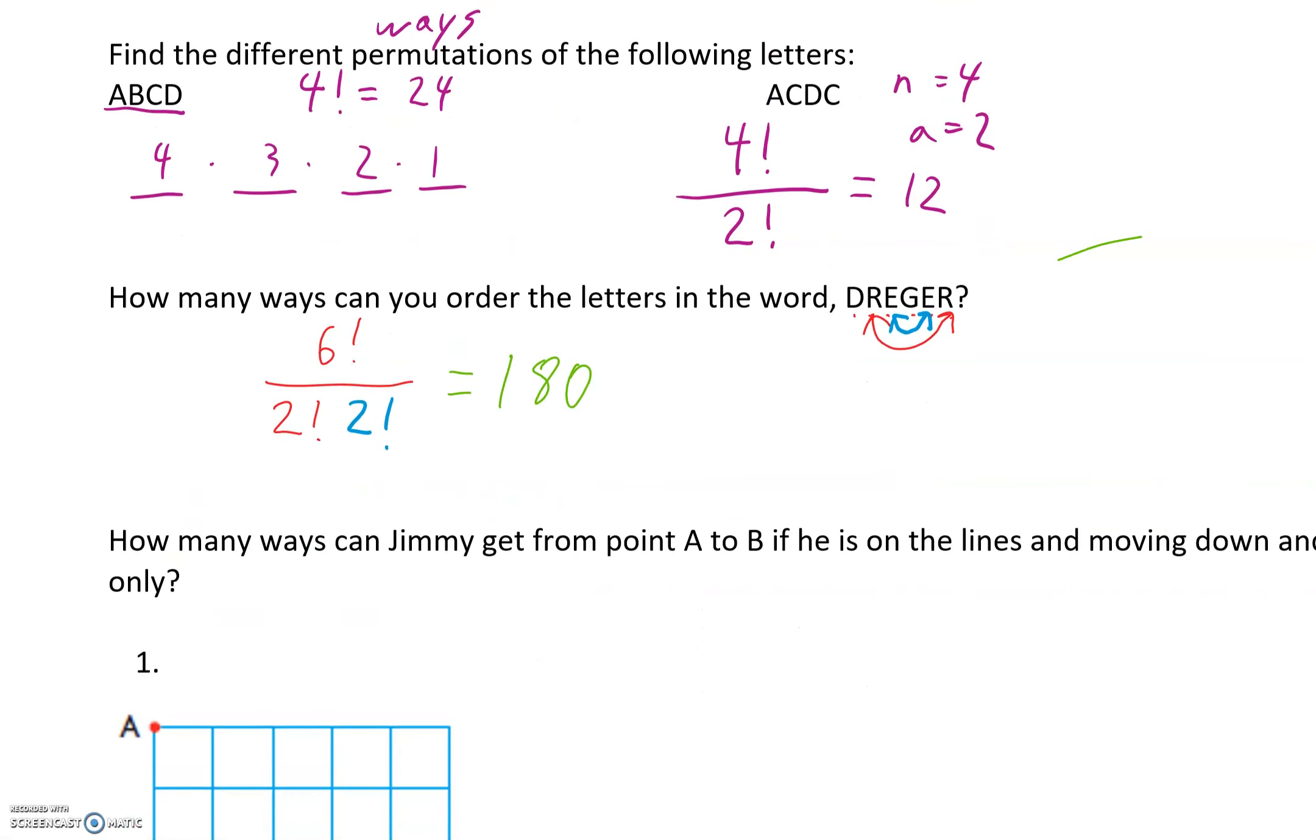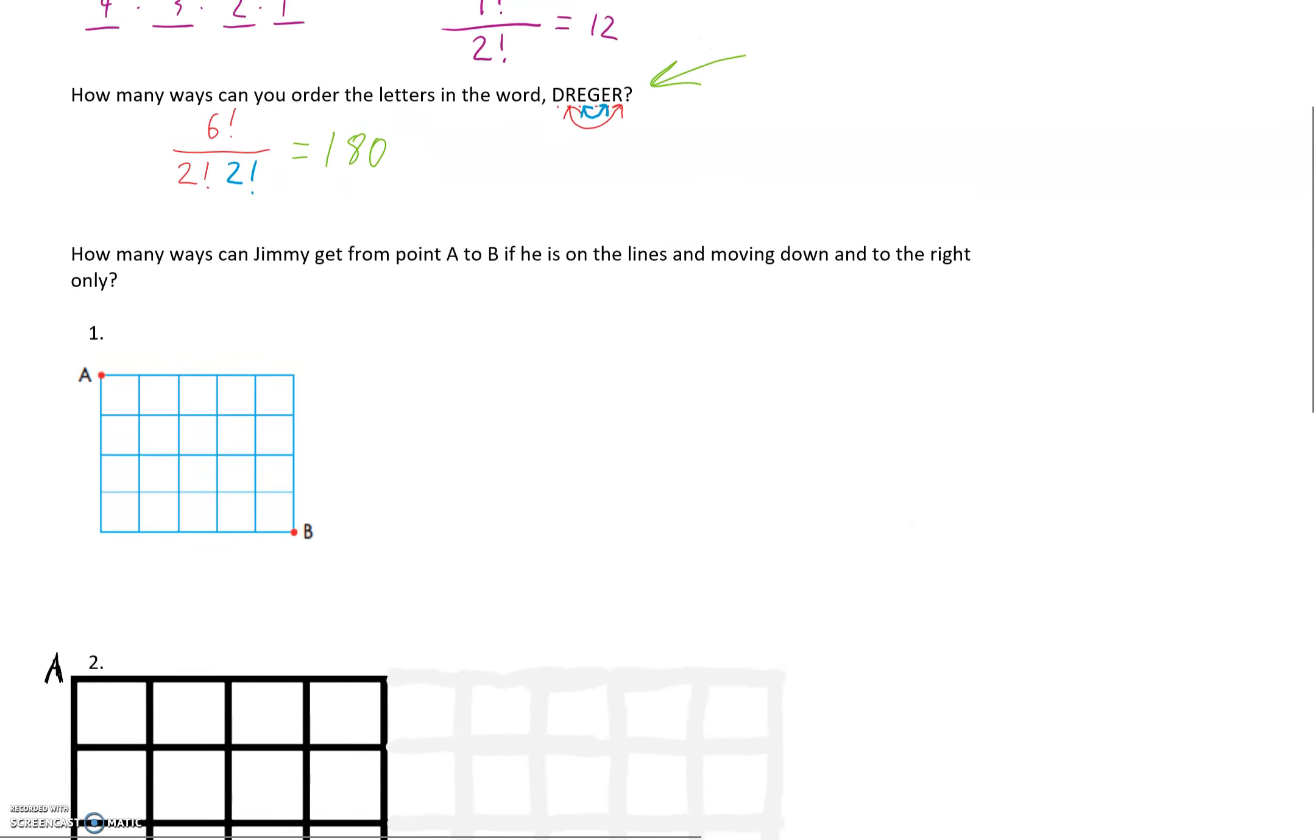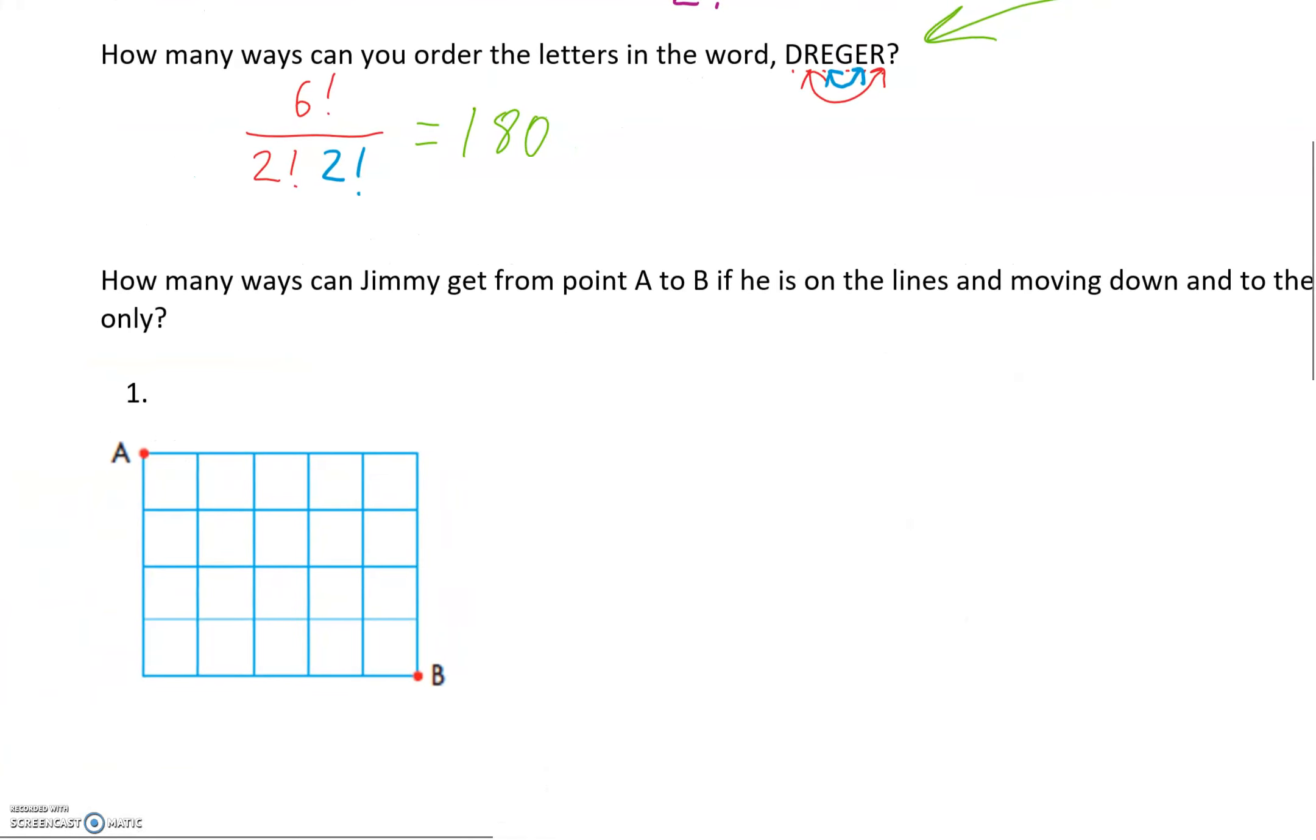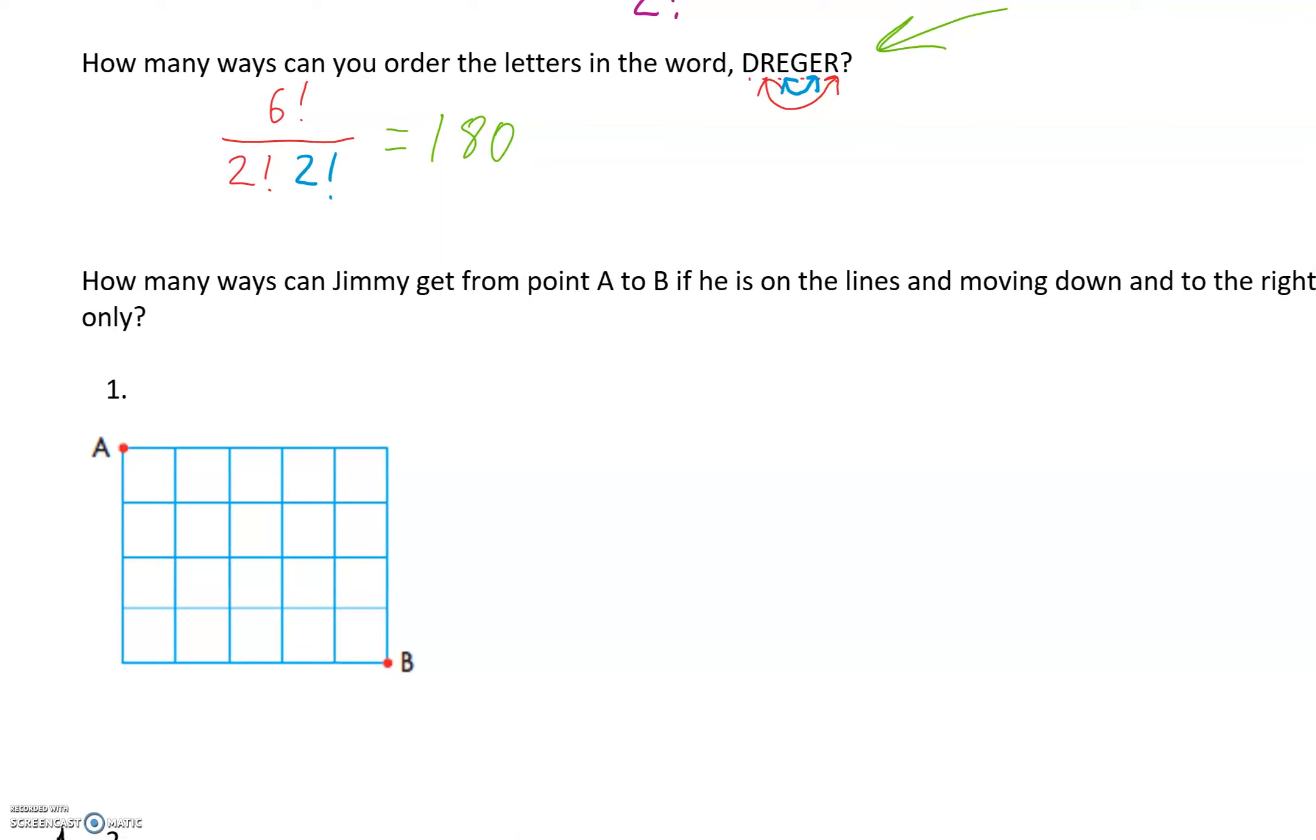This is a very common way of using this in a word with duplicated letters. But we also have these kind of two different situations. How many ways can Jimmy get from point A to point B if he's moving on the lines and down to the right only? So basically he can only go to the right or down at any given moment. This would be really painful to try to make all of the different possible combinations of pathways. This would take a long time to do.